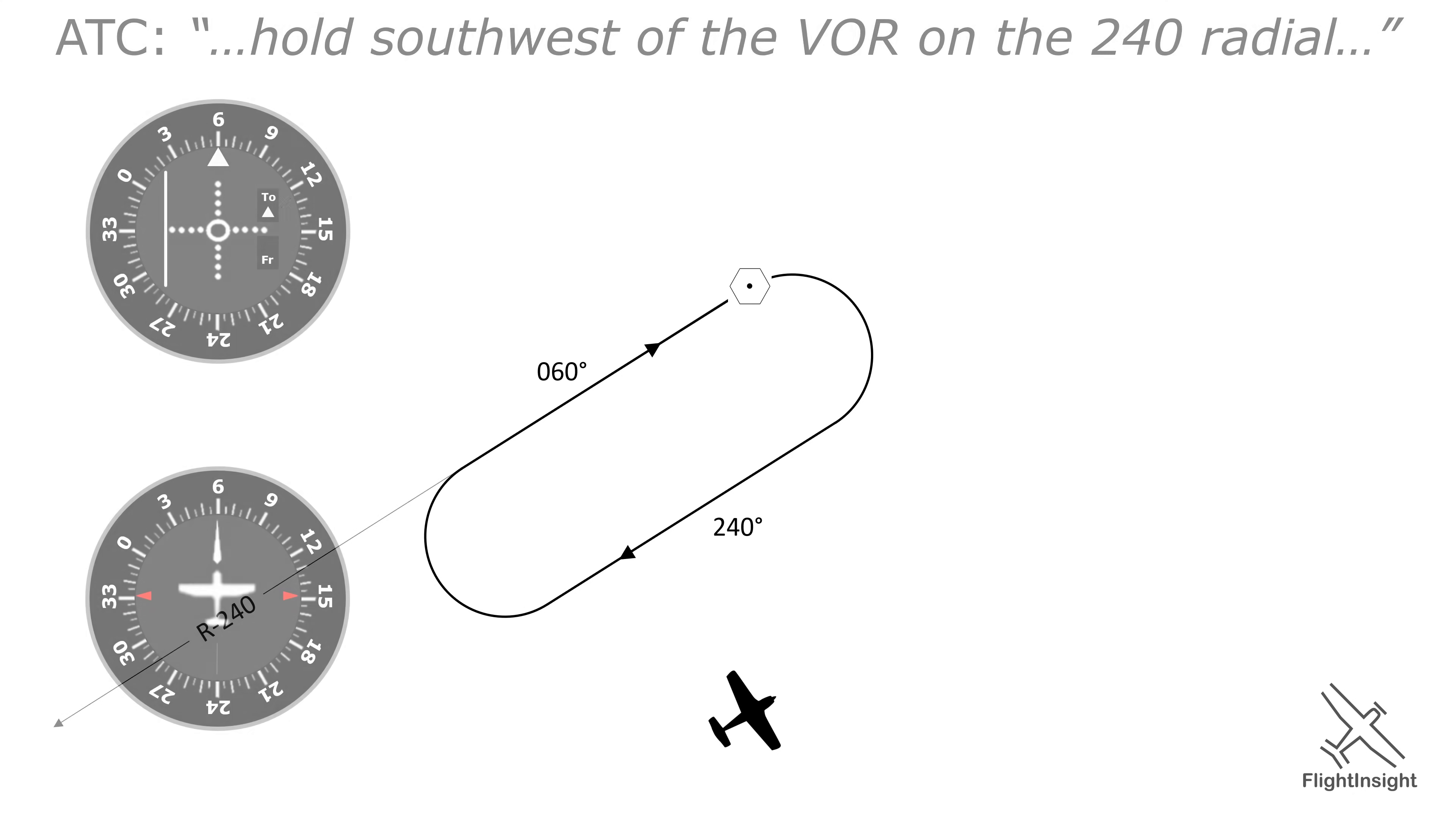Let's look at our VOR and heading indicator. The first step is to figure out what heading to fly to go to the VOR. We'll twist the VOR until the needle centers and we get a TO indication, showing due north, 360 degrees. Now we can turn that heading and we'll be pointed straight towards the station.